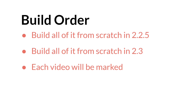I might have a video where I try to import the first project into 2.3, but I think what's going to be helpful here is not importing a project — though of course there is value in that — but really thinking about how you would build the same system from the ground up in 2.3. Each video after this one is going to be marked with whether it is being built in 2.2.5 or 2.3, which I'm probably just going to call either 2.25 or pre-2.3.